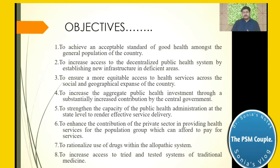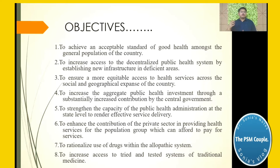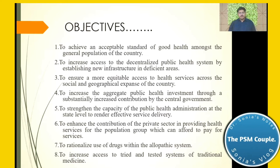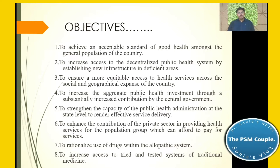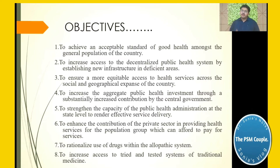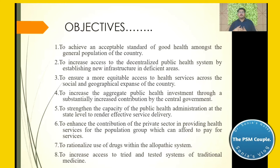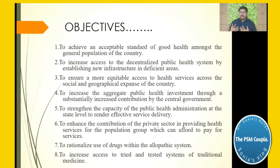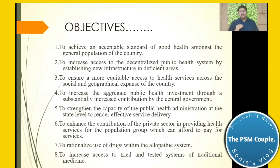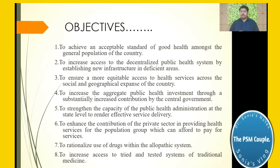The main objectives of the National Health Policy include: achieving an acceptable standard of good health among the general population; increasing access to a decentralized public health system by establishing new infrastructure in deficit areas; ensuring more equitable access to health services across social and geographical divides; increasing aggregate public health investment through a sustainable increase in central government contribution; strengthening capacity of public health administration at the state level; and enhancing contribution of the private sector in providing health services for those who can afford to pay.